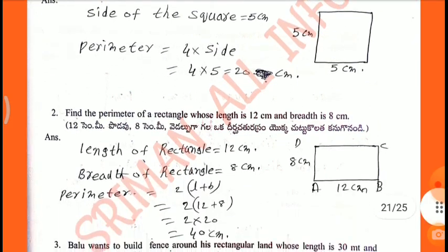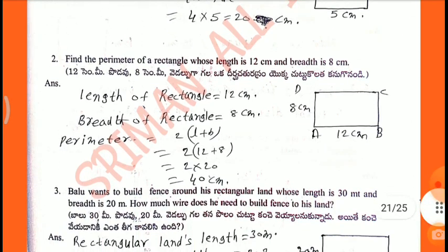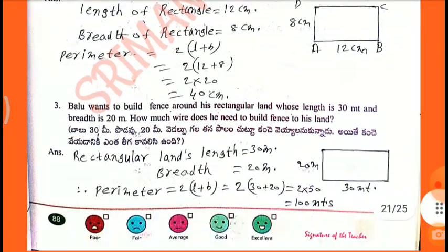Second: Find the perimeter of a rectangle whose length is 12 cm and width is 8 cm. Length equals 12 cm, width equals 8 cm. Perimeter equals 2 into (L plus B) — 2 into (12 plus 8) — 2 into 20 equals 40 cm.